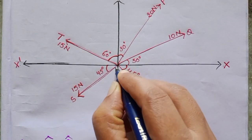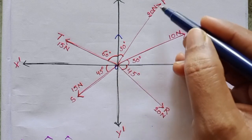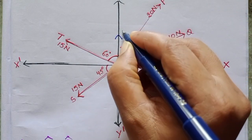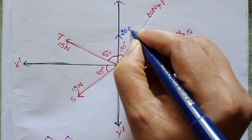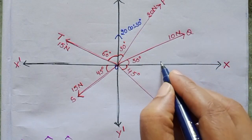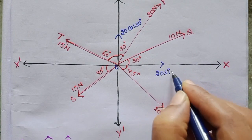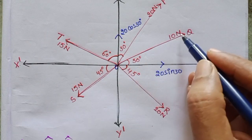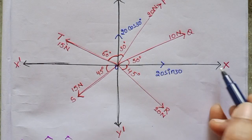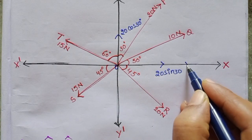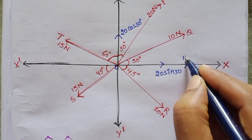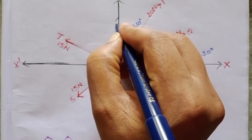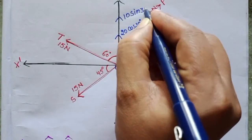This point is the origin. The component of OP along this direction — the magnitude of this force is 20 newton — so 20 cos 30 along x direction, and 20 sin 30 along y direction. Now the OQ force magnitude is 30 newton and it makes 30 degrees with the x axis. The component of this force is 10 cos 30 along x direction and 10 sin 30 along y direction.